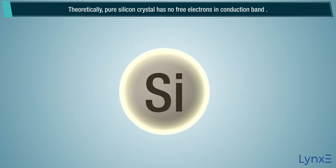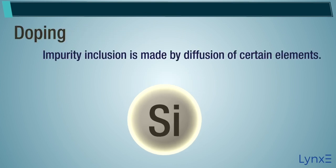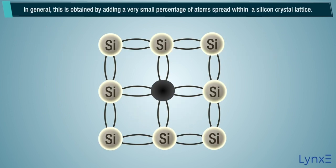Theoretically, pure silicon crystal has no free electrons in conduction band. For this reason, silicon has been doped. Doping means impurity inclusion is made by diffusion of certain elements. In general, this is obtained by adding a very small percentage of atoms spread within a silicon crystal lattice.